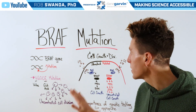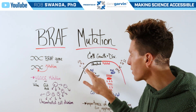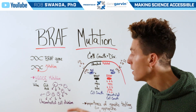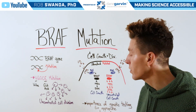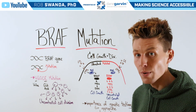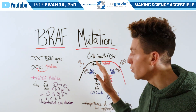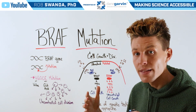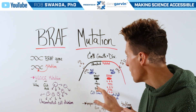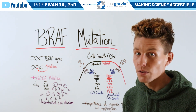During normal cell growth and division, growth factors come in and interact with growth factor receptors. These growth factor receptors can then signal to RAS, which will then signal to BRAF. BRAF can then send signals downstream to MEK and ERK, leading to cell growth.